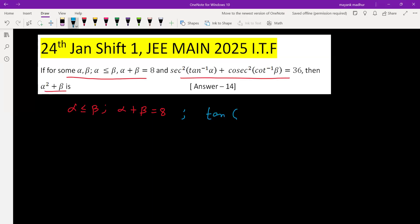We know that tan(tan⁻¹ α) = α and similarly cot(cot⁻¹ β) = β. Now sec² θ can be written as 1 + tan² θ. Similarly, cosec² θ can be written as 1 + cot² θ.